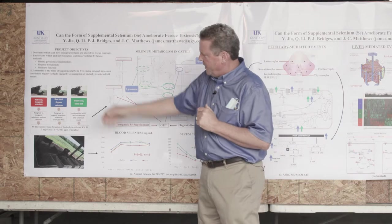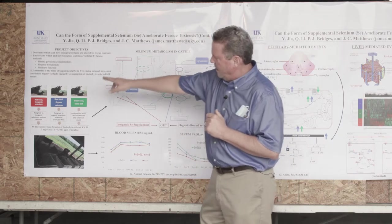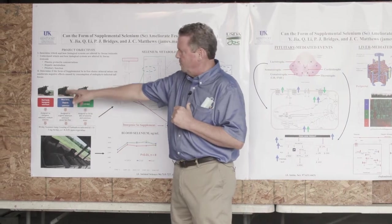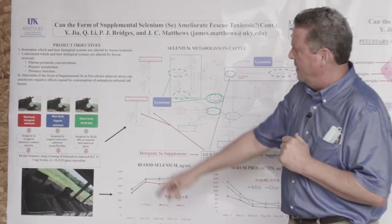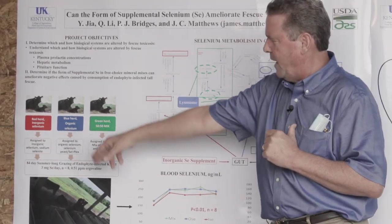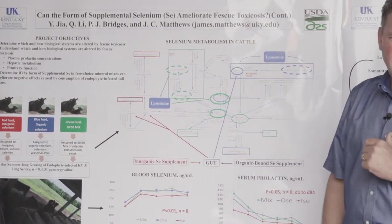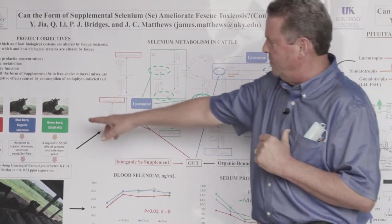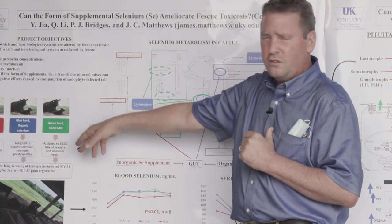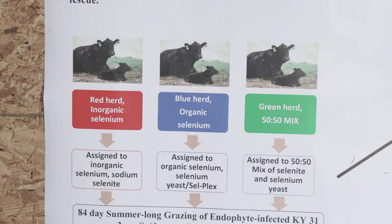For this particular study, we have what we call a red herd, which is inorganic selenium, a blue herd of cattle, which are only fed organic selenium, and then a green herd, which is sort of unique to what we're doing here at UK, where we're doing a 50-50 mix of inorganic, so sodium selenite, organic, in our case, selplex, and then a 50-50 mix of that.